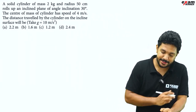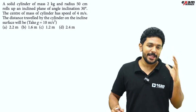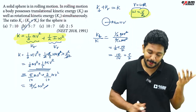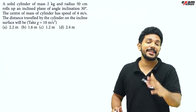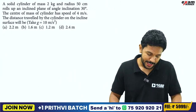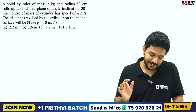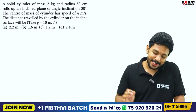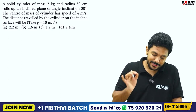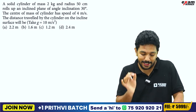This is the next type of question involving conservation of mechanical energy. A solid cylinder of mass 2 kg and radius 50 cm rolled up an inclined plane of angle of inclination 30 degrees. The center of mass of the cylinder has a speed of 4 m per second. The distance travelled by the cylinder on the inclined surface will be?